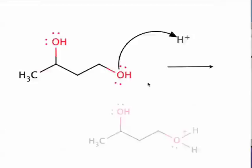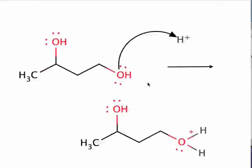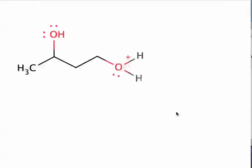When we do that, we're going to generate a relatively reactive intermediate, an oxonium ion. Now, this has kind of laid the foundation for the formation of our cyclic ether.